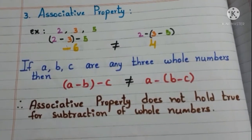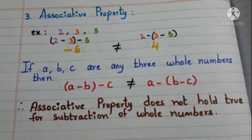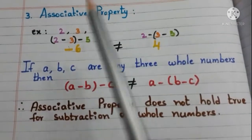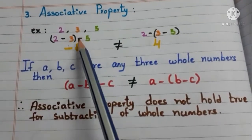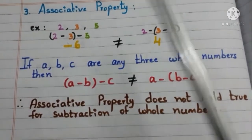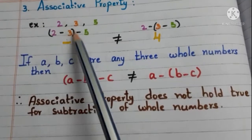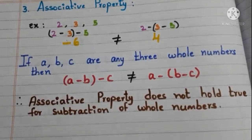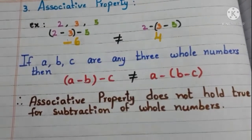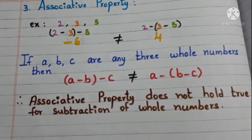Now, associative property. Let us see with the example. Take 3 whole numbers: 2, 3, and 5. First, find the difference of 2 and 3, then take away 5 from that. We get the answer negative 6.